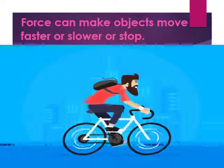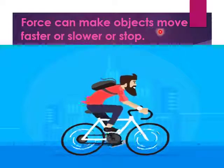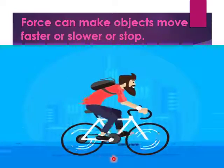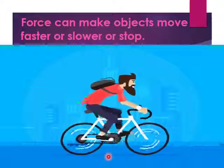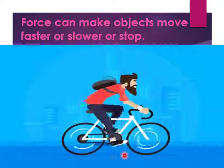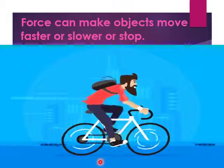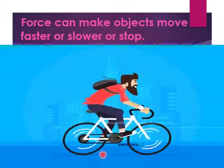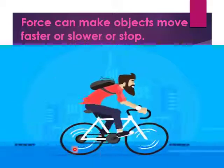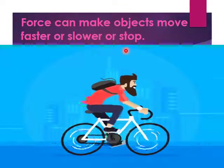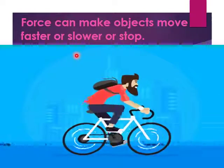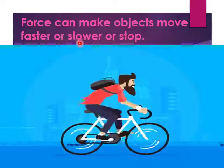My dear students, force can make the object move faster, or slower, or stop. Here you can see — what is this machine? Yes, this is called a bicycle. We can move it faster, or slow it down, or we can also stop it by slowing the movement or applying force. By applying higher force, we can move faster. We can also slow down this bicycle, and stop it by applying the brakes. Force can make the object move faster, or slower, or stop.